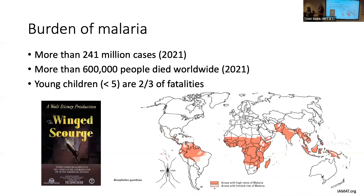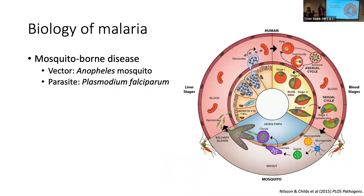While we don't really have malaria transmission in the U.S. anymore, we did about 100 years ago. There's a nice public service announcement called 'The Winged Scourge' about the Anopheles mosquito and how it transmits malaria. A little bit about the biology: it's a very complicated two-host life cycle requiring the Anopheles mosquito and a vertebrate host. I'll focus entirely on Plasmodium falciparum and human hosts.